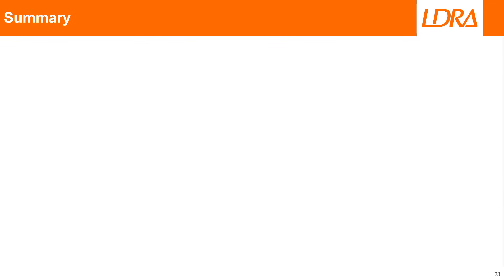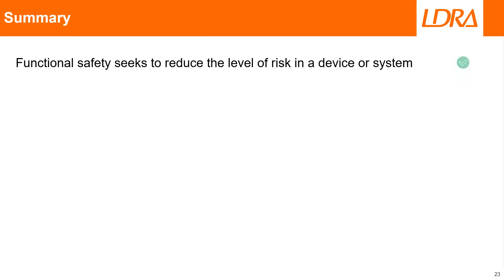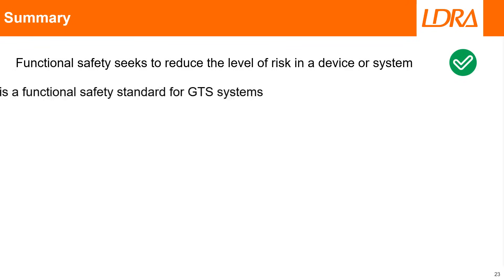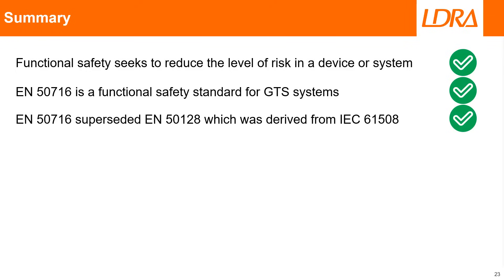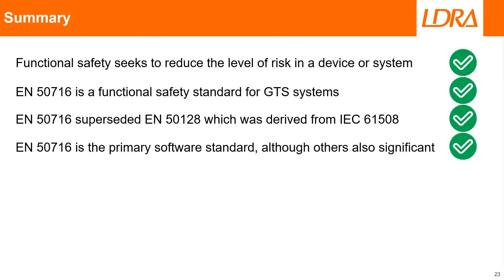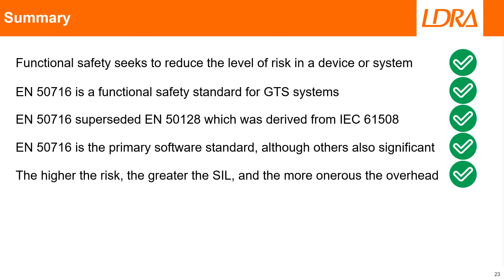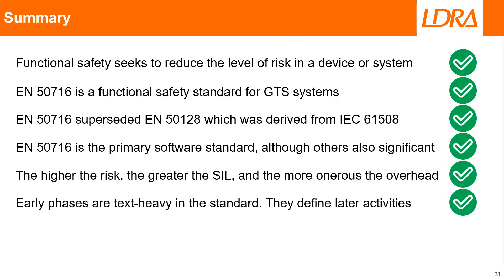To summarise: functional safety seeks to reduce the level of risk in a device or system. EN50716 is a functional safety standard for GTS and rail systems. EN50716 superseded EN50128, which was in turn derived from IEC 61508. EN50716 is a primary software standard, although others are significant. The higher the risk, the greater the SIL and the more onerous the overhead. Early phases are text-heavy in the standard — they define later activities which are described more briefly.